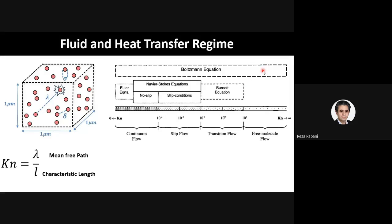About the transition flow, which I have focused on, the Burnett equation is a possible choice. Besides the Boltzmann equation, which also governs here, there is some problem about the transition flow. Rarefaction can be dealt with using the Burnett equation and Boltzmann equation and similar equations that can be solved numerically or even analytically.